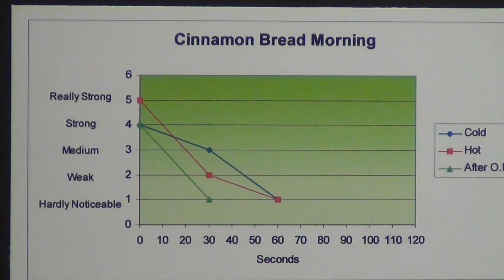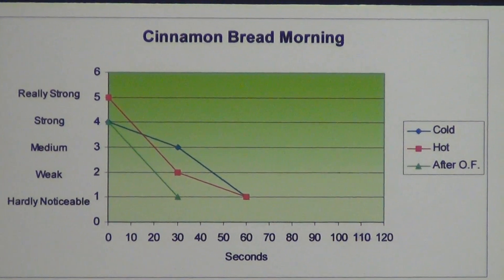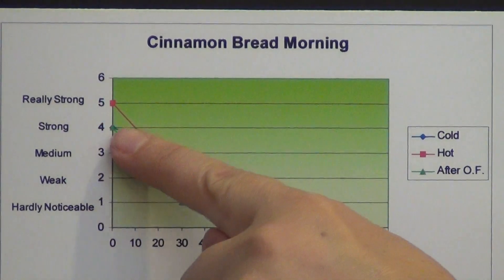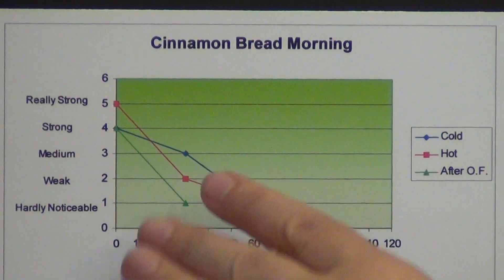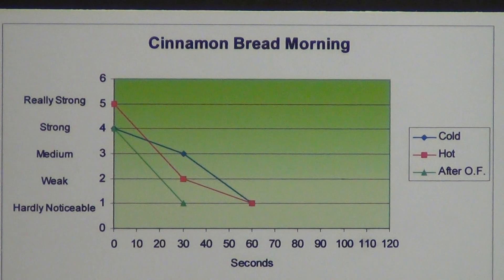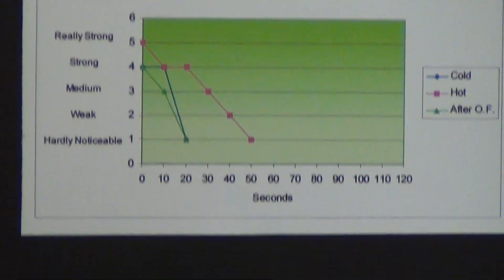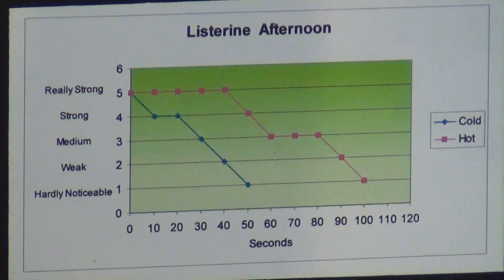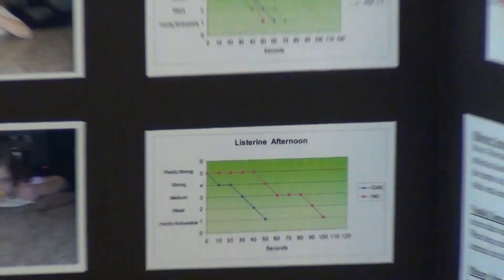She tested the cinnamon bread and the other scents cold, hot, and then after smelling something strong — she smelled Listerine. What she found was that the smell went down quite a bit faster for the cinnamon bread after she had smelled something else. She also did the same project for lemon, chocolate milk, and plain Listerine. Then she ran the whole test a second time in the afternoon and charted that separately because it was a retesting at a different time — the results were slightly different but showed very similar trends.